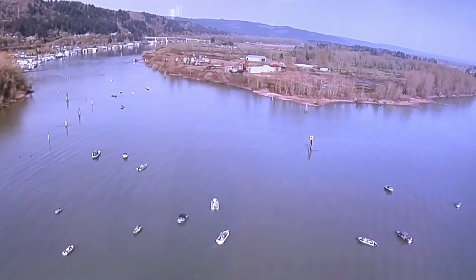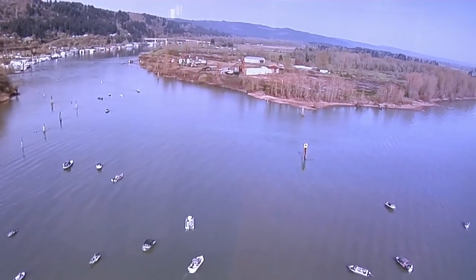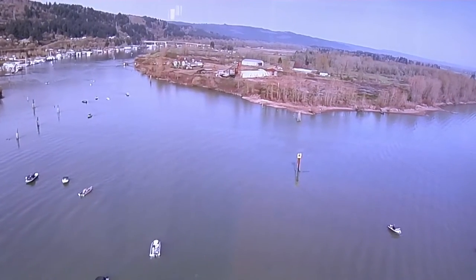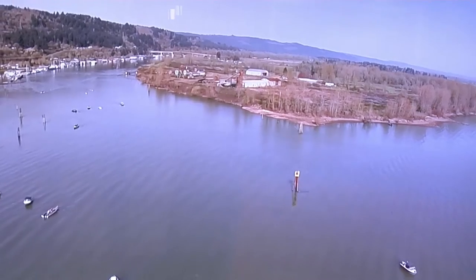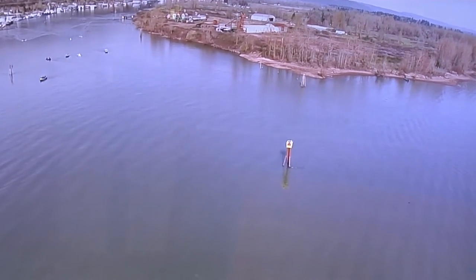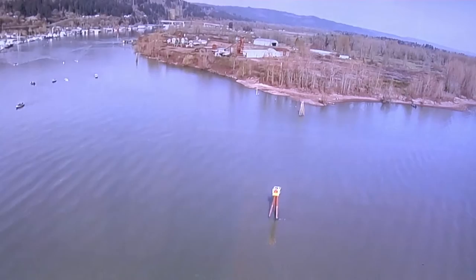For today's show we'll be using aerial footage from our UAV to break down a popular section of the Willamette River known as Fred's Marina. This area is located at the top of Savies Island and is where the Willamette River splits into the main stem and Multnomah Channel.